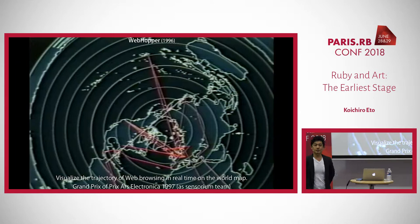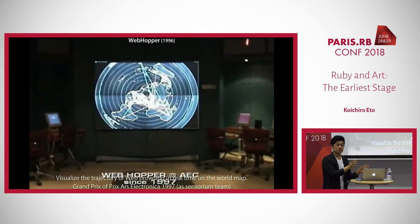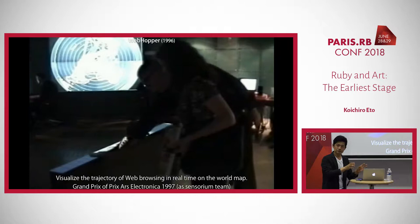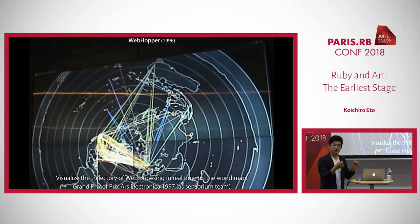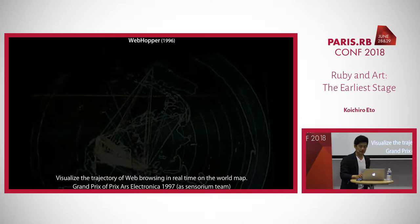For example, someone accessing a website in Europe, then clicking a link to another website in the US — virtually you are in Europe, and then you jump to the US. I checked the traffic of the Ethernet line, TCP dumped the packet, and then converted the data to latitude and longitude in real time, and then visualized it on the screen.